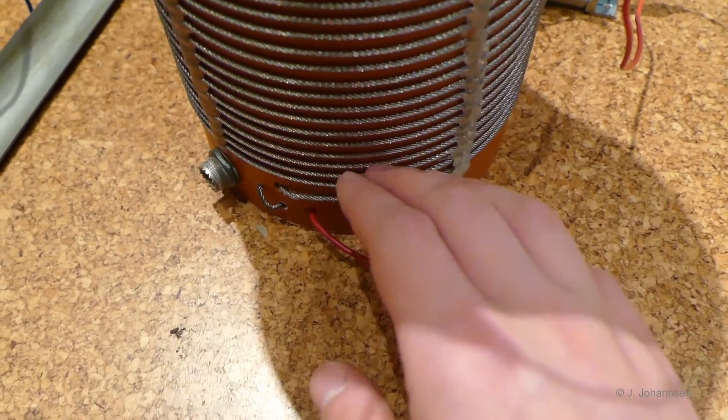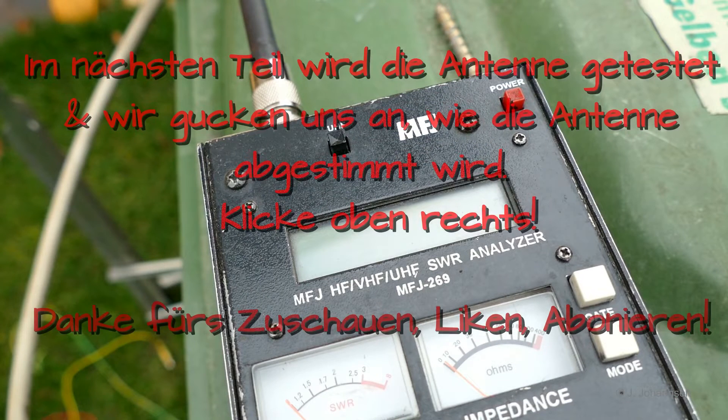In the next video we will have a look at how to adjust this antenna and install it, and how to find the best resonance point. For that we will use this MFJ269 antenna analyzer and we will see on which band this antenna is working.